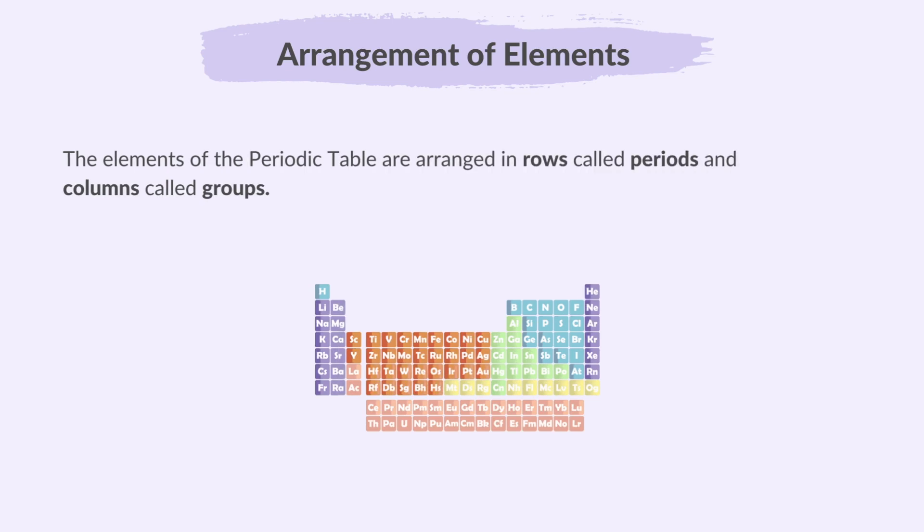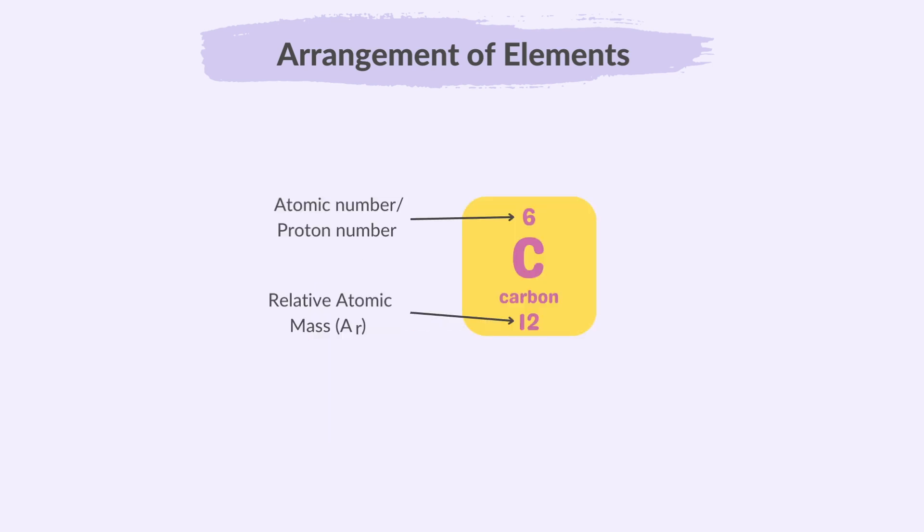The elements of the periodic table are arranged in rows called periods and columns called groups. Just a quick recap, the elements in the periodic table are displayed with their atomic number, which is the number of protons they have, and their relative atomic mass.